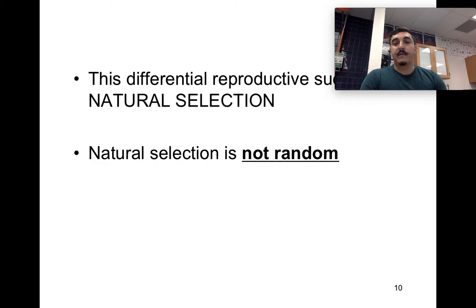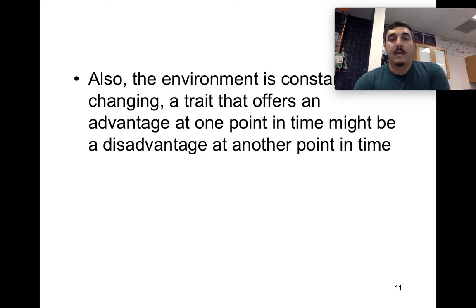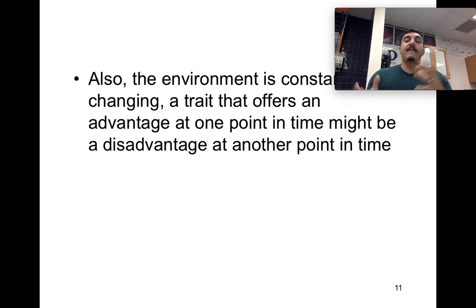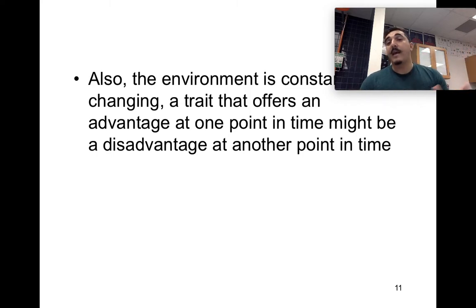This differential reproduction is called natural selection, and it is not random — it specifically targets individuals with traits that help or hinder survival. Also, the environment is constantly changing, so a trait that is advantageous at one point might become a disadvantage when the environment shifts, requiring further adaptation.